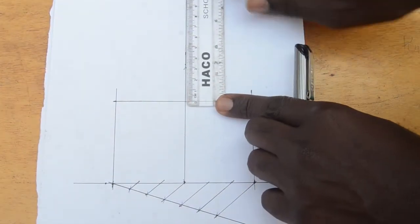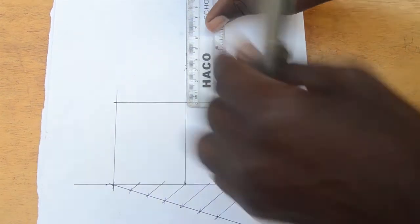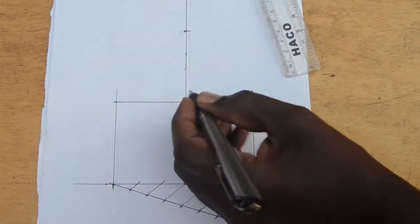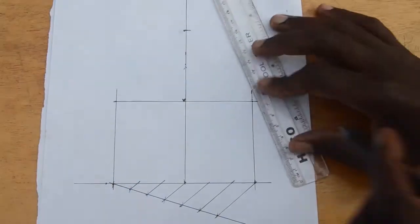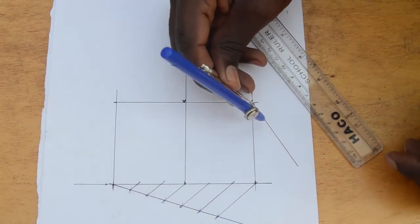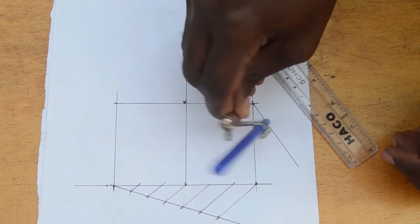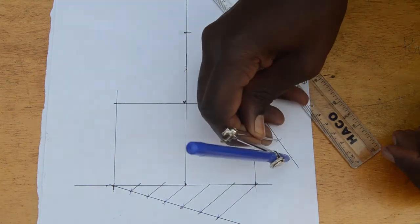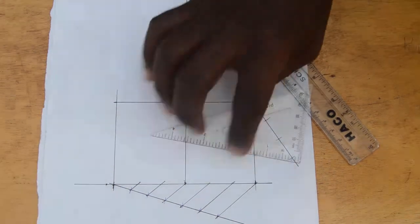We then mark off the transverse axis from our set vertex. Divide the width or altitude into half the number of parts divided on the span - in this case, it's three.